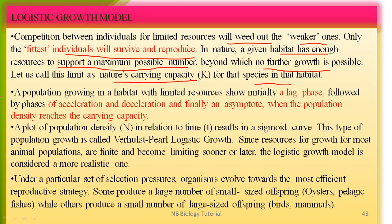A population growing in a habitat with limited resources initially shows a lag phase. This lag phase is followed by acceleration or deceleration, and finally the population density reaches a plateau — the stationary phase — when the population density reaches the carrying capacity. A plot of population density N against time t results in the sigmoid curve. This type of population growth is called logistic growth.